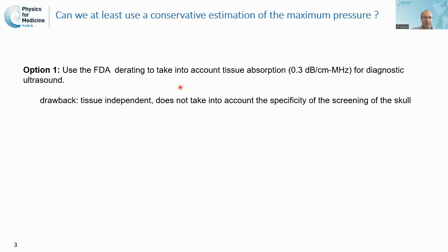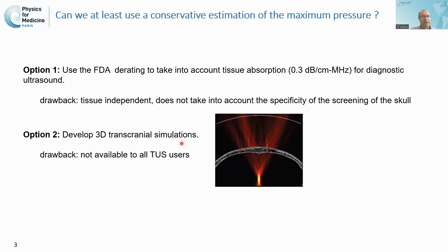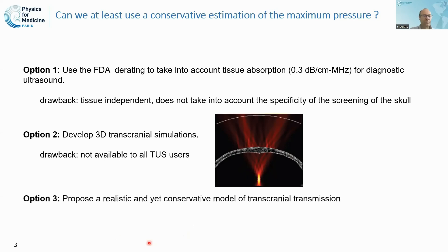One can also develop 2D or even better 3D transcranial simulations to estimate the pressure field inside the brain, but the problem is that those techniques are not available to all transcranial ultrasound users. So we propose a third option: to develop a realistic and yet very conservative model of transcranial transmission.